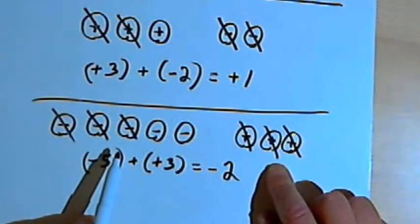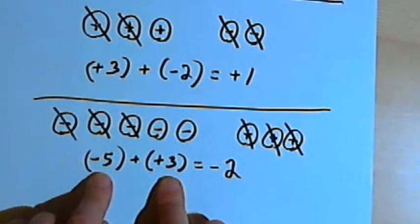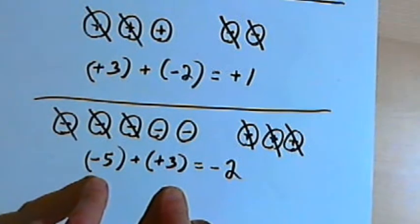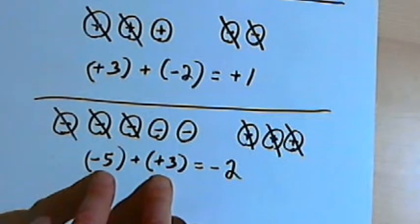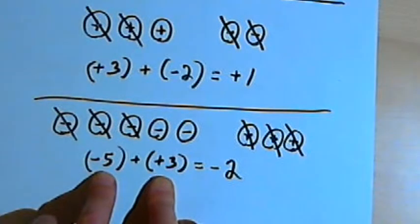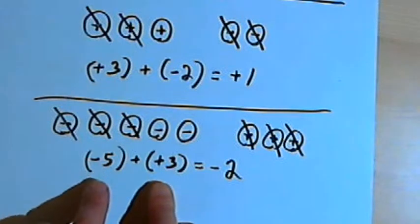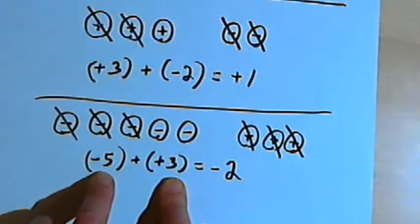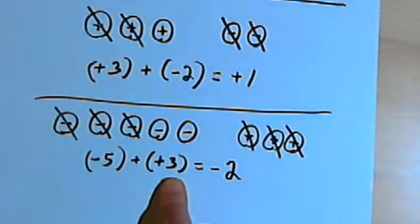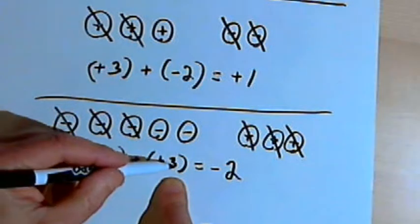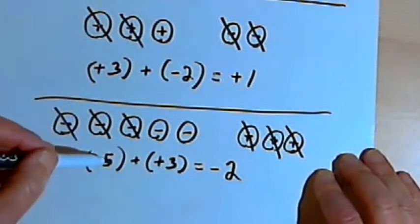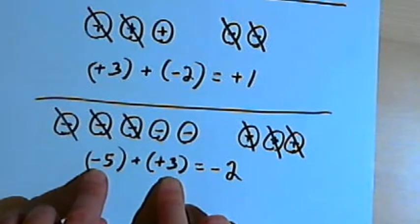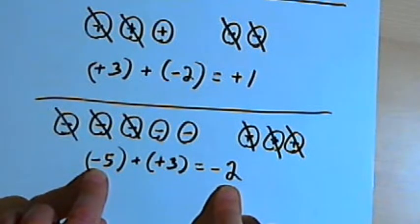Without using the chips, I can say the two numbers were different, so I take the difference of their absolute values. The absolute value of negative 5 is 5, and the absolute value of 3 is 3. The difference between 5 and 3 — subtracting the smaller from the bigger — gives 2. Then the 5 was the bigger of those two numbers and it was originally negative, so my answer is going to be negative 2.